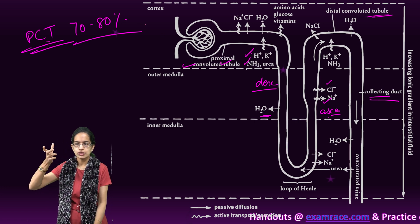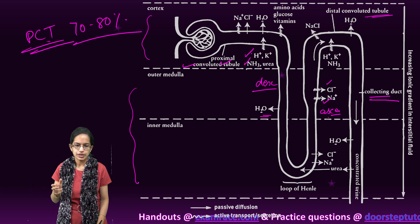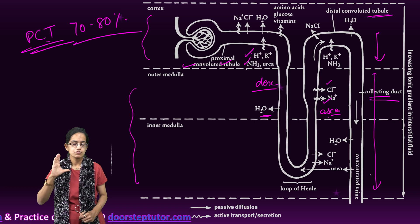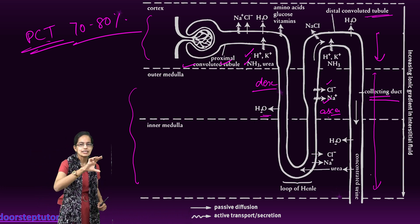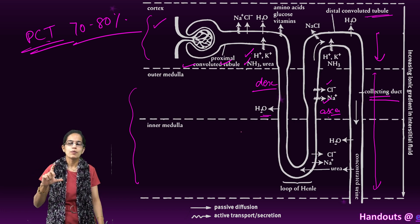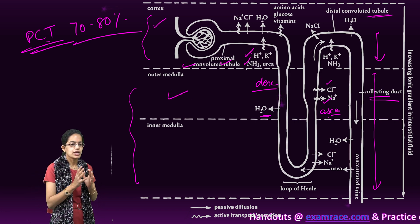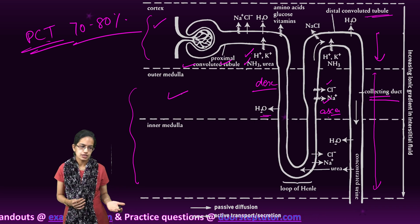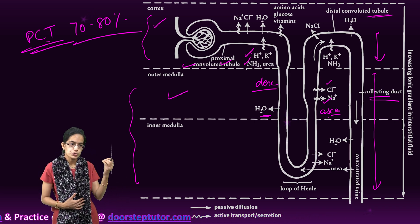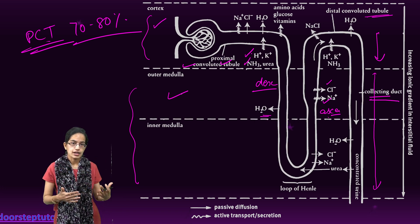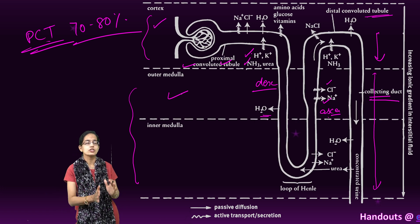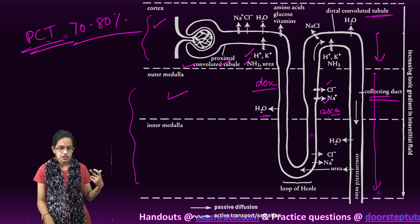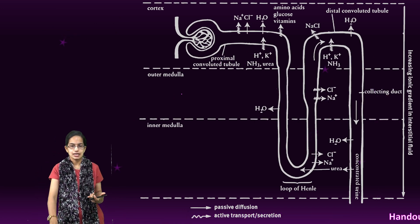The collecting duct is present in both the cortex and medulla regions. The PCT, DCT, and renal capsule are seen only in the cortex, while the loop of Henle is seen in the medulla. The collecting duct is where most of the water is reabsorbed, and a small amount of urea passes to maintain osmolarity and pH balance. There is also selective secretion of hydrogen and potassium ions here.